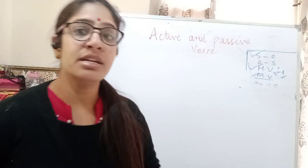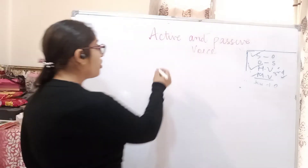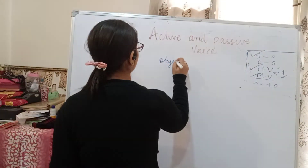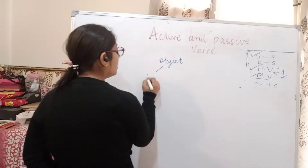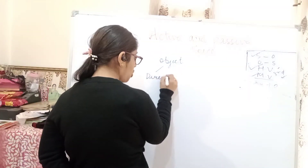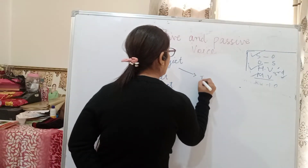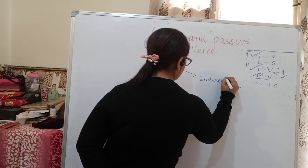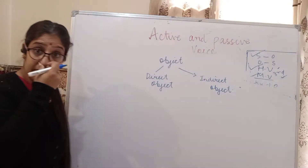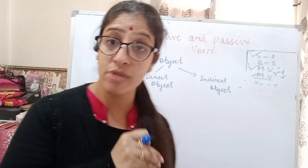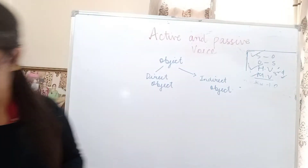Now first, let us understand what those two objects are. I have already discussed with you that an object is what receives an action. We have two types of objects: one is the direct object, and one is the indirect object. Now, how do we get to know which one is which? Let us understand with the help of an example.